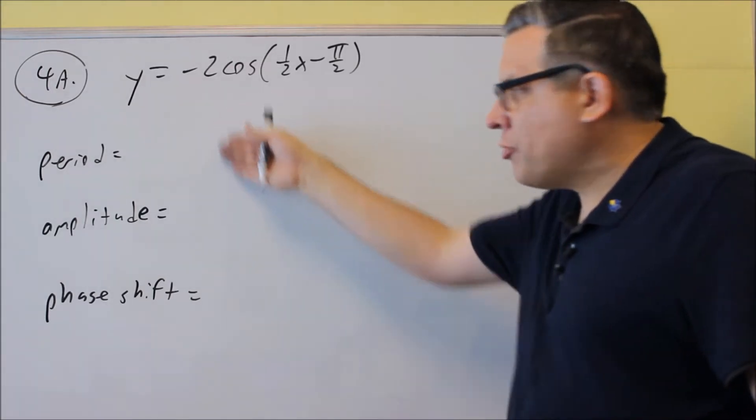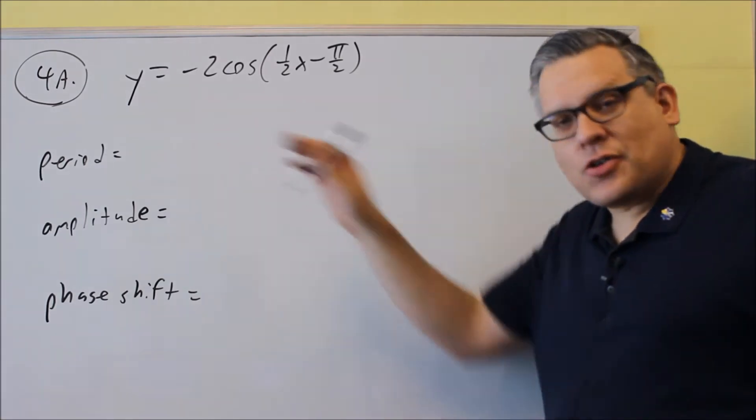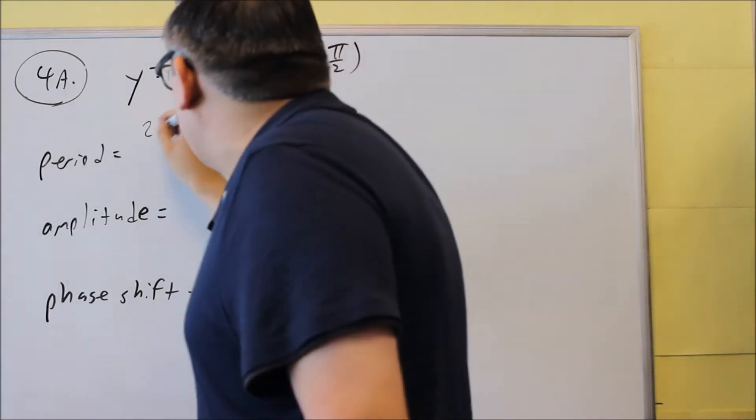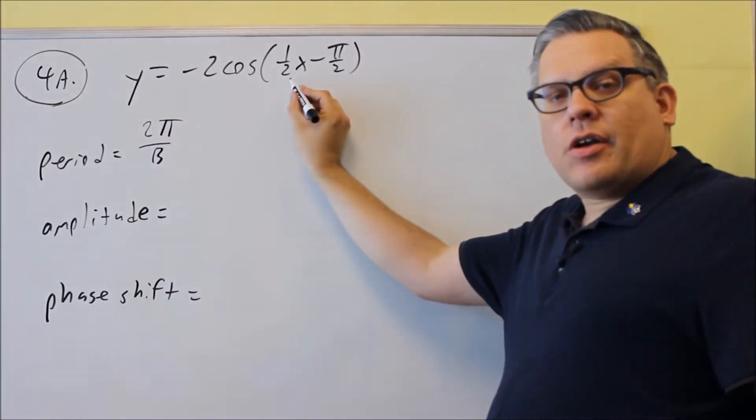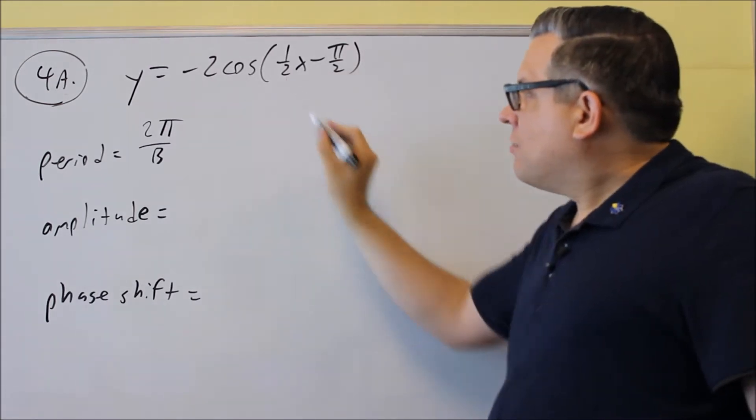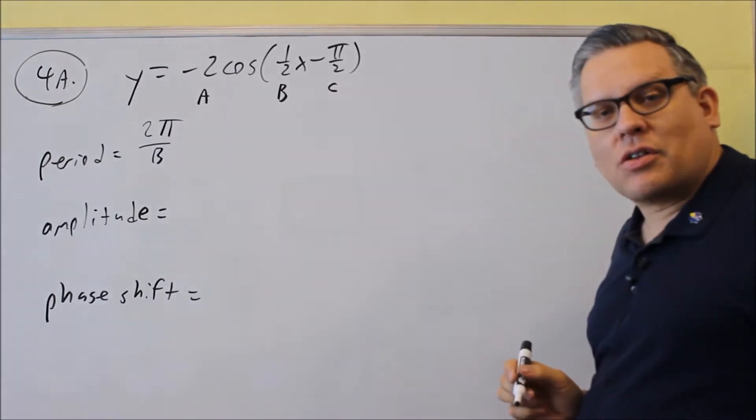Now, you need to know these formulas, so the formulas I'm going to put up here are ones that you want to know for your note card. First thing is period. Your period is equal to 2π over b, and b is this number right here in front of the x. This is b, so actually it's labeled like this. This is a, this is b, and this is c, just like that.